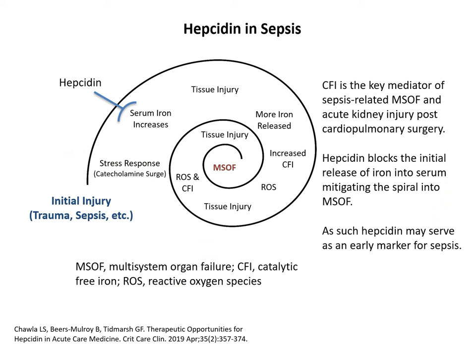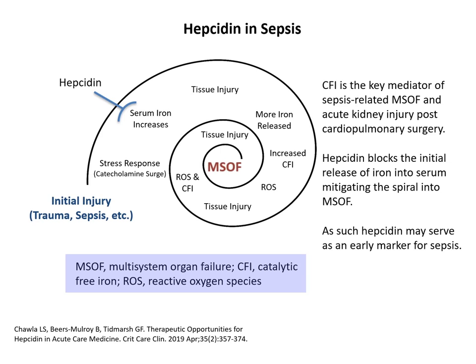Iron plays a major role in the systemic organ failure associated with sepsis. As tissue is damaged by infection and the subsequent overactive immune response, iron is released beyond a level the body can control. This leads to the presence of catalytic free iron, which causes the formation of reactive oxygen species. The oxidative damage to cell membranes causes further tissue damage, creating a spiraling condition eventually leading to multi-system organ failure.